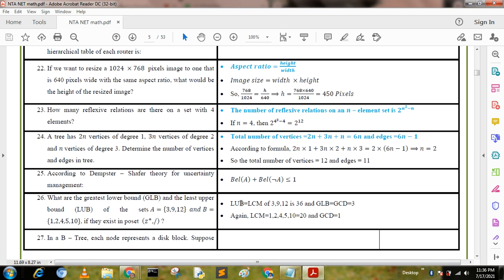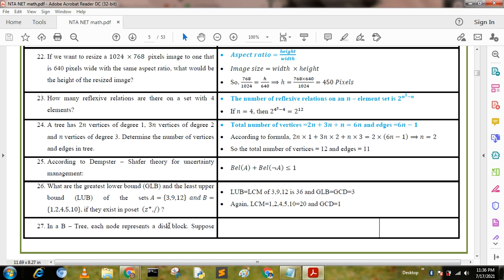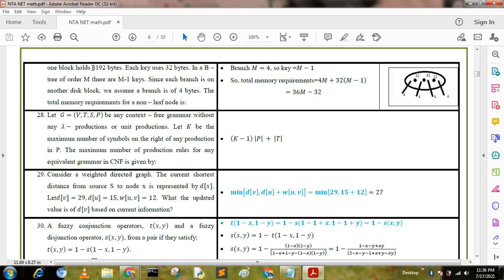In a B-tree, each node represents a disk block. Suppose each block is 8192 bytes, each key uses 32 bytes. In a B-tree of order m, there are m minus 1 keys. Since each branch is a disk block, we assume a branch is 4 bytes. The total memory requirement is 4m plus 32(m minus 1), which equals 36m minus 32.